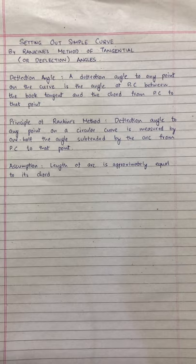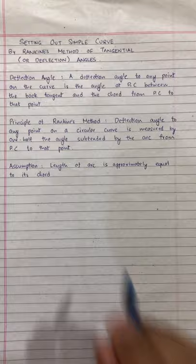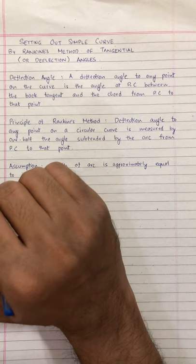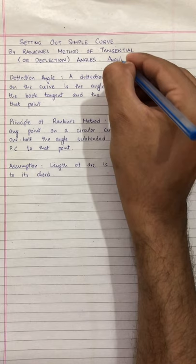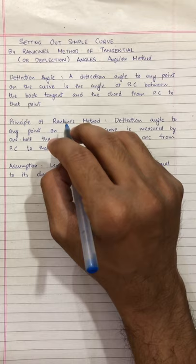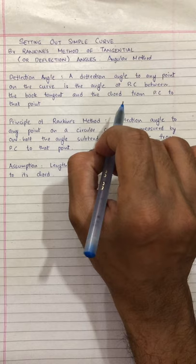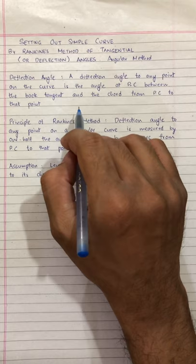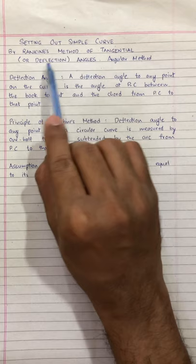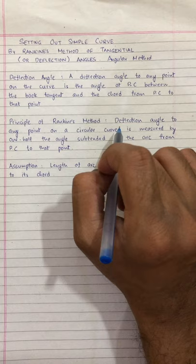Hello all, my name is Sujan George and welcome to this lecture series of Surveying. Today we will be discussing about setting out a simple curve by Rankine's method of tangential or deflection angles. This method is actually an angular method of setting out a simple curve. In previous videos, simple curves were set out with linear methods, such as offsets from chord produced. The angular method will be solved by Rankine's method of tangential or deflection angles.